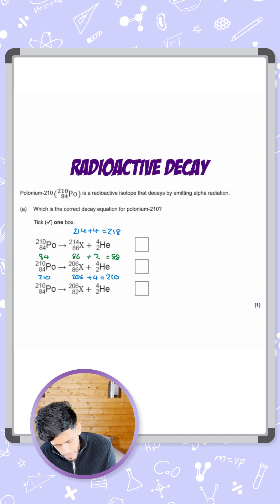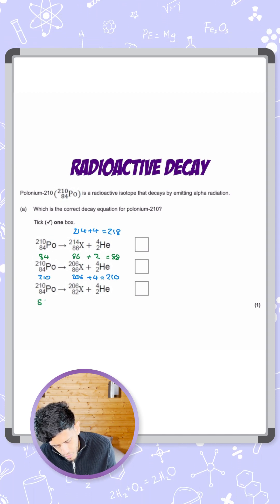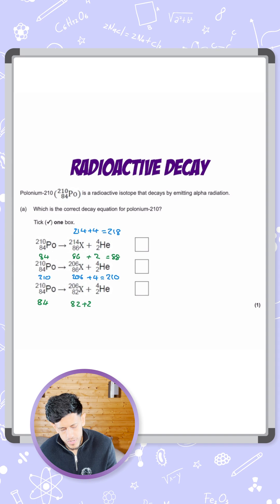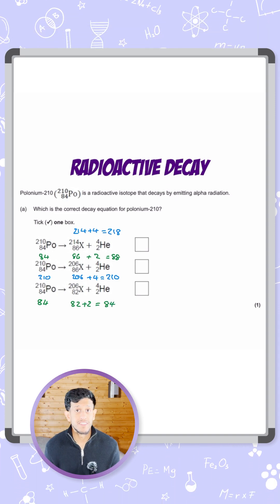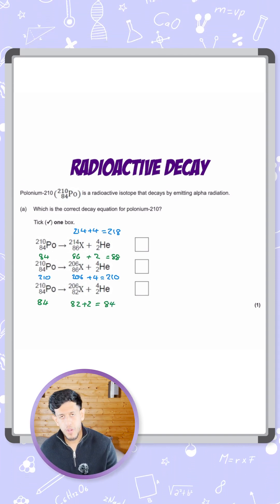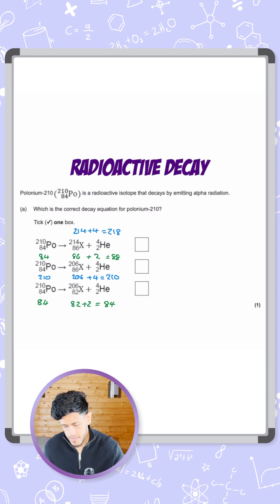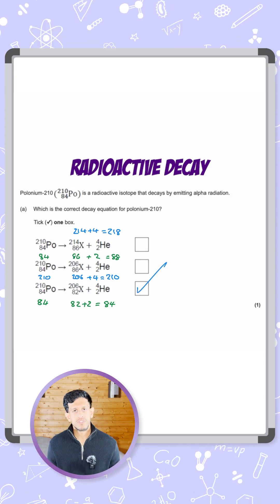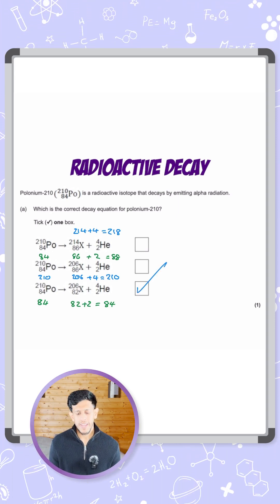So we're just going to do it for completion, we've gone by elimination, but let's have a look. 84 here for polonium on the left, and on the right-hand side we have 82 plus 2 for the atomic number, as a total of 84. That balances both the mass number and the atomic number, so our correct answer is the third answer here: 206, 82 for element X.